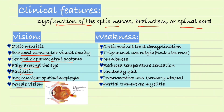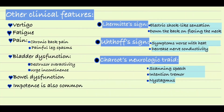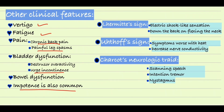In the weakness component, patients present with corticospinal tract demyelination or trigeminal neuralgia, where patients usually have sudden facial pain. Some patients also present with numbness, reduced temperature sensation, unsteady gait, or sensory ataxia. In severe cases, patients also present with partial transverse myelitis. Other clinical features include vertigo, fatigue, chronic back pain, painful leg spasms, bladder dysfunction such as detrusor overactivity or urge incontinence, bowel dysfunction, and impotence.